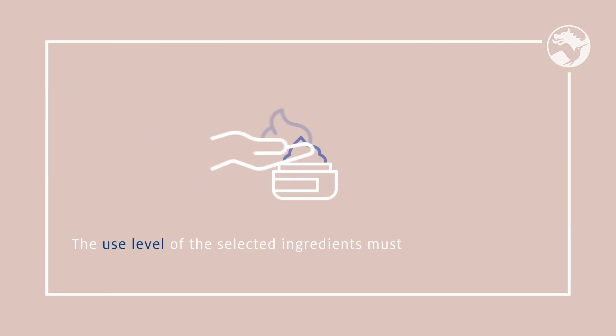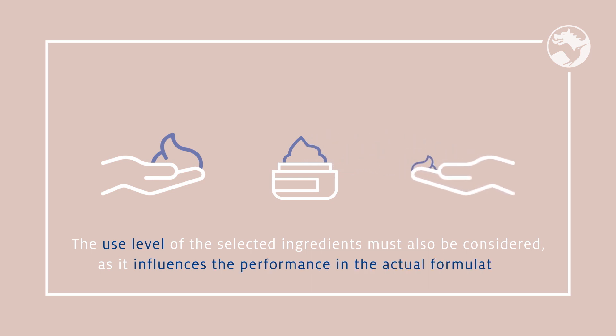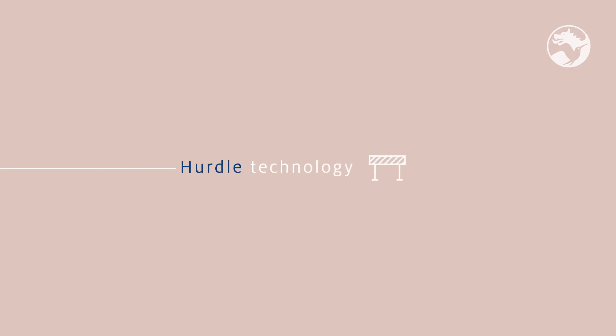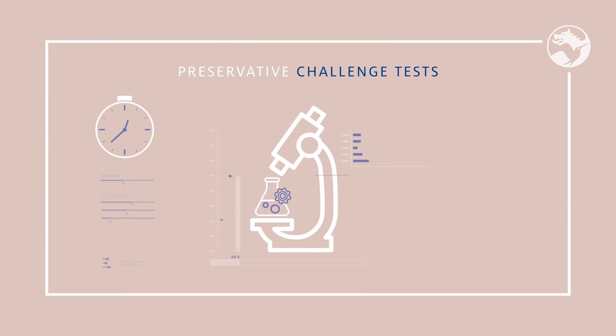The use level of the selected ingredients must also be considered, as it influences the performance in the actual formulation. While suppliers usually provide recommended use levels, factors such as pH and the presence of certain other ingredients can improve or weaken efficacy. In such instances, the use concentration may be reduced or may have to be increased, respectively. We have a fairly good understanding of the impact of most of these factors, known as the hurdle technology. Ultimately, preservative challenge tests performed on the final formulation will tell if the product protection system is adequate, and then final adjustments can be made to the composition.